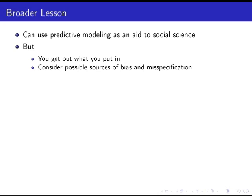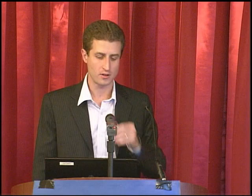That's a broader lesson: we're going to see more and more predictive modeling of the kind learned this morning used as an aid to social science. But just like with anything else, you get what you put in. If your predictors are going to pick up mechanical correlations with geography, that's what you'll pick up when you go to do your social science. You need to keep your social science hat on and worry about bias and misspecification when designing your predictive model or dimensionality reduction strategy, just as you do when taking your low-dimensional summary to do social science.